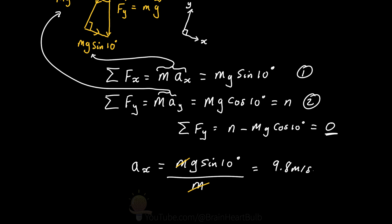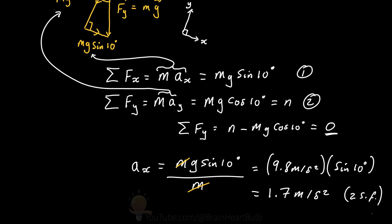So our acceleration along the x-axis, or down our slope, is 1.7 meters per second squared, to two significant figures. This acceleration sounds quite realistic.